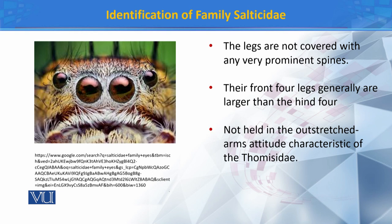When members of family Salticidae attack their prey, they first attach themselves to the substrate they are on using a silk thread. After that, they jump onto their prey. The reason they attach with silk is so that if their attack fails and they are in mid-air, they can return to their original position via the silk thread.